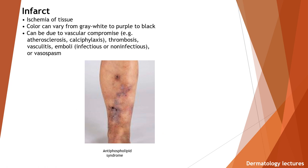Infarct. It is the ischemia of tissue. Color can vary from grey-white to purple to black. Can be due to vascular compromise, for example atherosclerosis, calciphylaxis, thrombosis, vasculitis, emboli (infectious or non-infectious), or vasospasm. Here you can see the infarct of antiphospholipid syndrome.